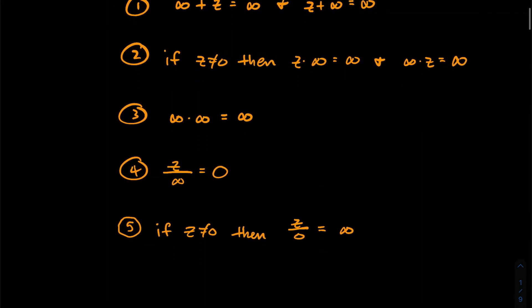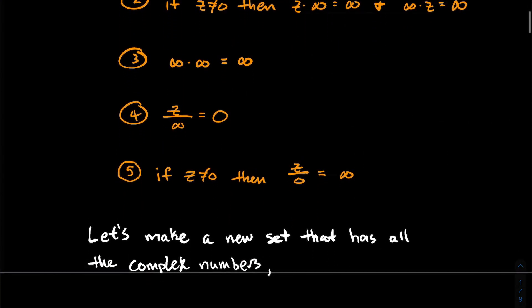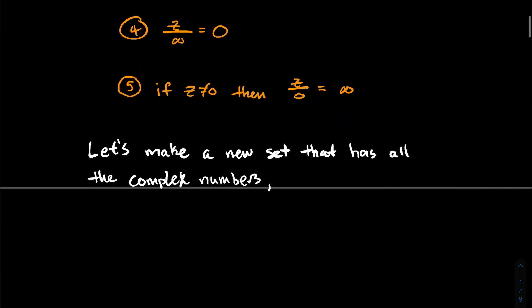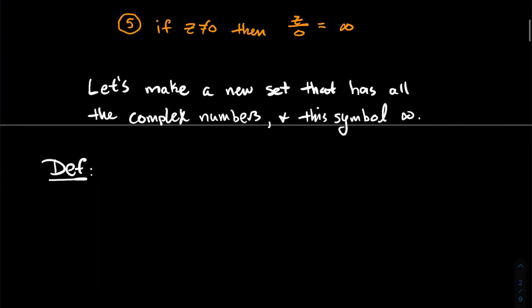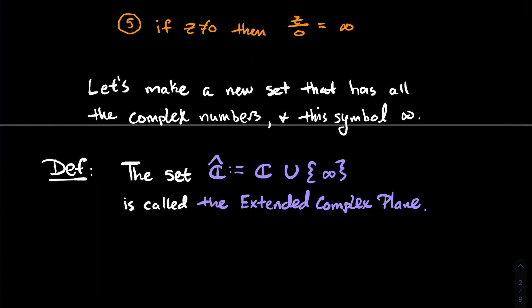And if z is non-zero, then z divided by zero — we'll just say that's infinity. So what we're going to do is make a new set that has all the complex numbers and the symbol infinity. The set ĉ, defined to be the union of the complex numbers with this new symbol infinity, is called the extended complex plane.